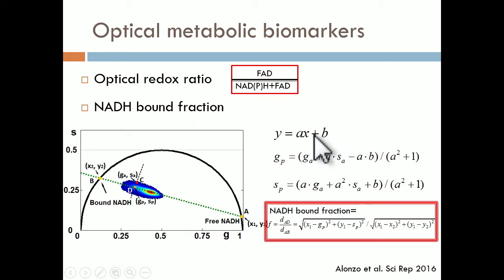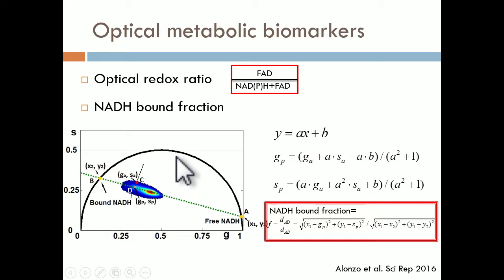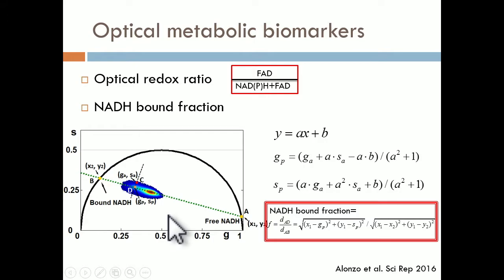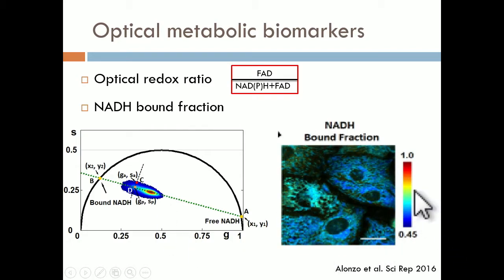Every pixel and every different hue represents a slightly different metabolic state within a cell, and this readout has been validated against mass spec with different types of cells. Another metabolic readout is the NADH-bound fraction, extracted from fluorescence lifetime images using a phasor display analysis to extract the relative fraction of NADH found in bound form in the mitochondria — another metabolic biomarker we can use to create NADH-bound fraction-coded images.